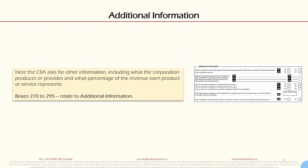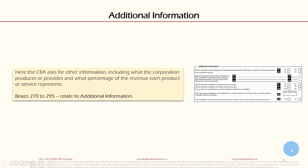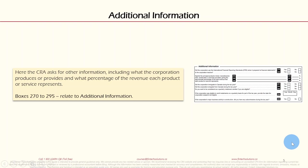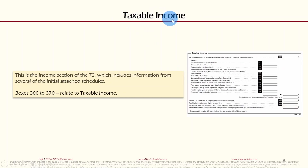Section 3 is Additional Information. The CRA asks for other information including what the corporation produces or provides, and what percentage of revenue each product or service represents. Boxes 270 to 295 relate to additional information. You'll indicate whether the corporation manufactures goods or provides services and at what percentage, and answer other questions such as whether IFRS was followed.